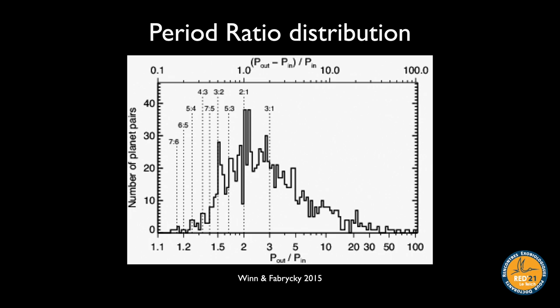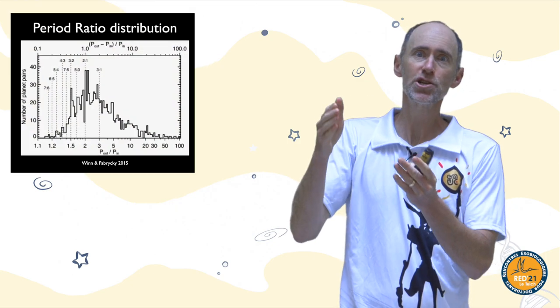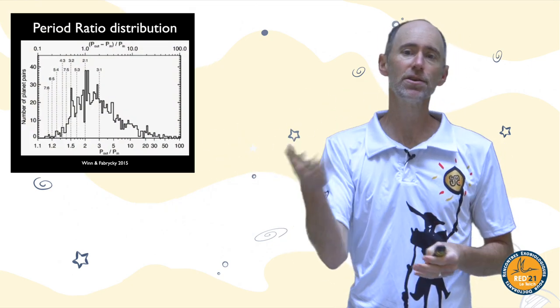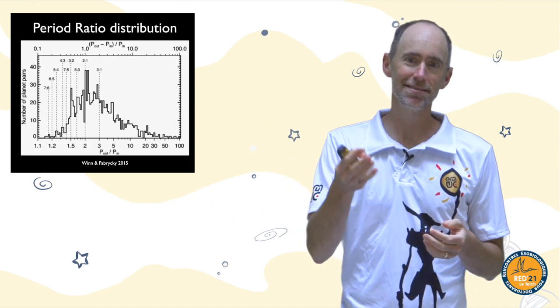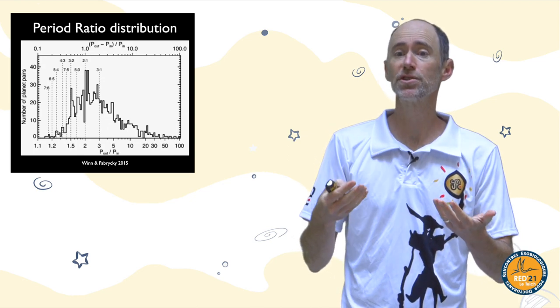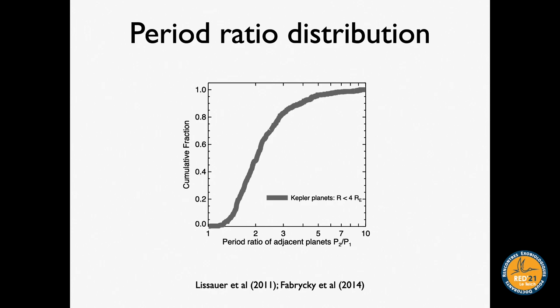We can compare the separation between super Earths in terms of period ratio with those in the solar system. Even though solar system planets are further out, the Earth-Venus orbital period ratio is not that different from what we see for many of these super Earth systems. This leads us to the period ratio distribution: taking all systems with more than one planet, computing the ratio of orbital periods of every neighboring pair.